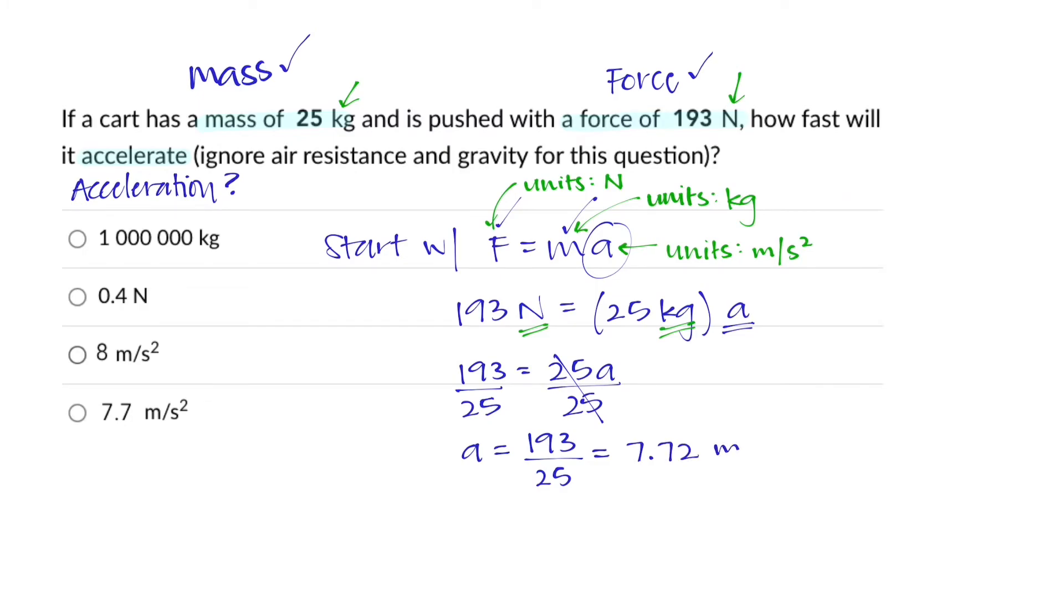The acceleration is 7.72 meters per second squared, which is great. But one thing we need to realize is that we are limited to the number of significant figures that we can use in representing our final answer. And that comes down to the significant figures that are given to us in the original problem. In this case, in the mass that's been given, we only have two significant figures.